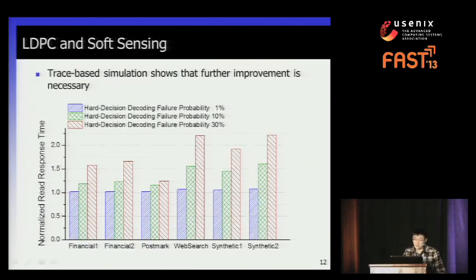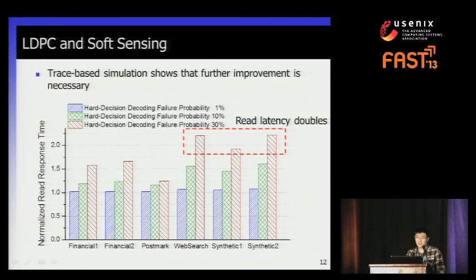Here is the effectiveness of the two-step strategy. Our trace-based simulation shows it works very well when the hard decision decoding failure rate is very low. But when the hard decision failure rate reaches 30%, for some read-intensive traces the read response time delay still doubles. So further improvement is necessary.